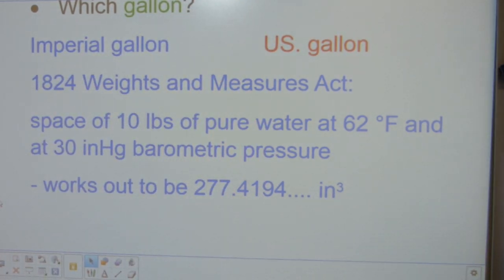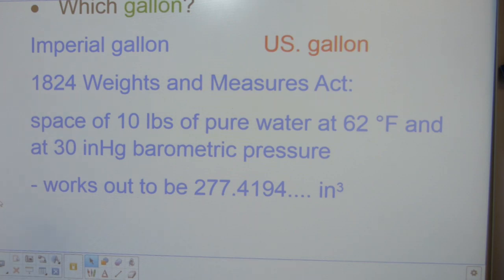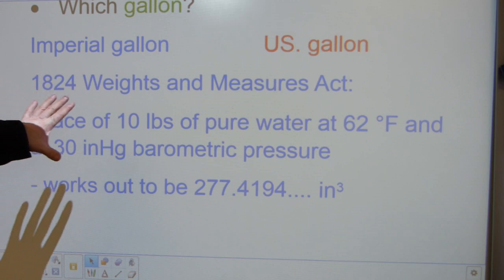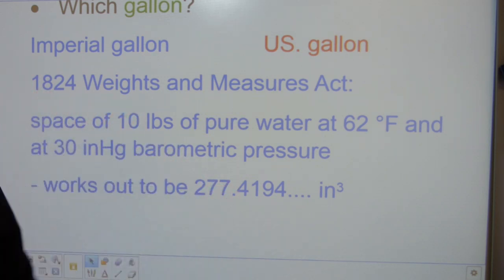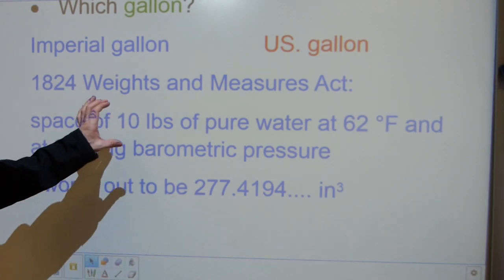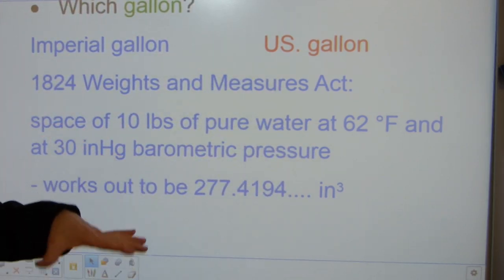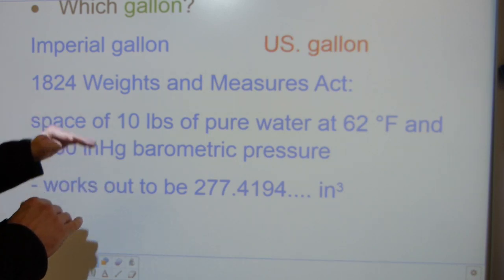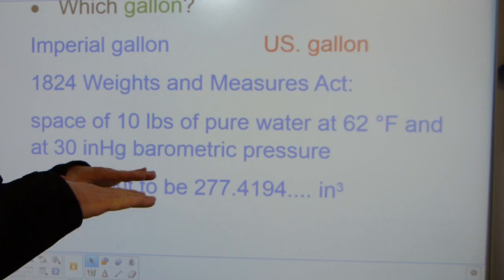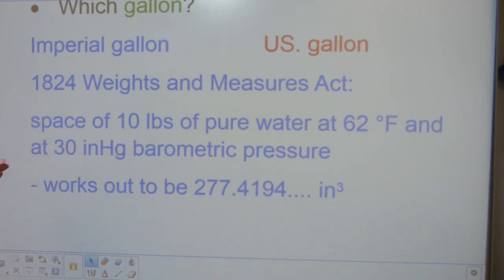To recap the differences and similarities: why 277.4194 cubic inches? This infinite decimal number comes from the different definition. It's not based on a fixed volume but based on a fixed weight. Because the temperature and barometric pressure make a difference, because if you go up a mountain there's less air pressure, how much air is pushing down on the scale makes a difference. That's why it's an infinite decimal number.